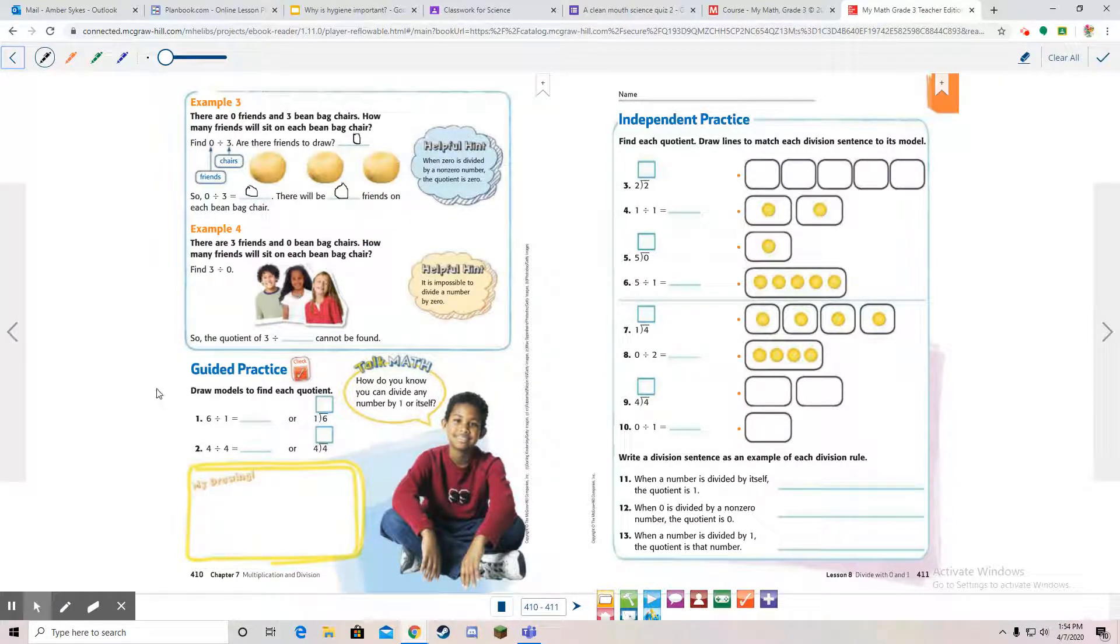Not too hard at all, is it? Draw models to find each quotient. Six divided by one. You have six people, but there's only one thing. Let's do another beanbag chair. There's only one group, but there are six people. If you divide that equally, then you just put all one, two, three, four, five, six. All six would just be on the one chair again. Six divided by one is what? It is six. The quotient is six.